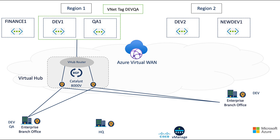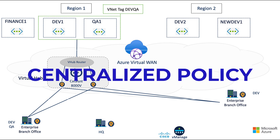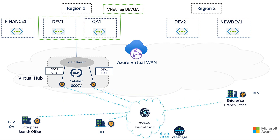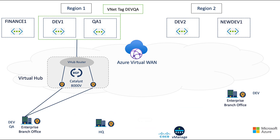We can further restrict traffic by using centralized policies. In this example, only the dev QA branch should have access to the QA workloads. Our virtual hub is still learning the tagged VNet prefixes and using BGP to exchange those routes with our Catalyst 8000v routers inside the virtual hub. Using our separate secure SD-WAN control plane and centralized policies, we can block the QA routes from being advertised to the dev-only branch. This will form data plane connectivity, allowing our dev QA branch access to the QA workloads and vice versa.